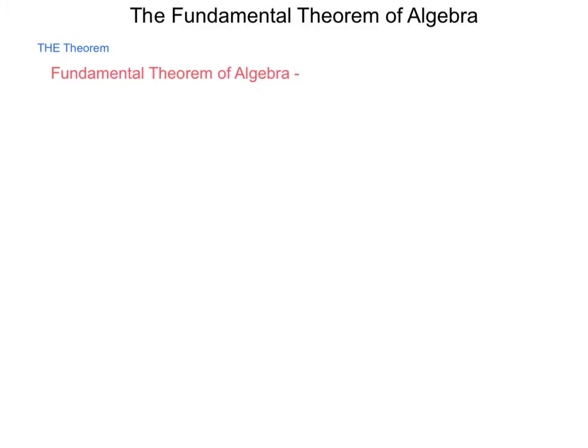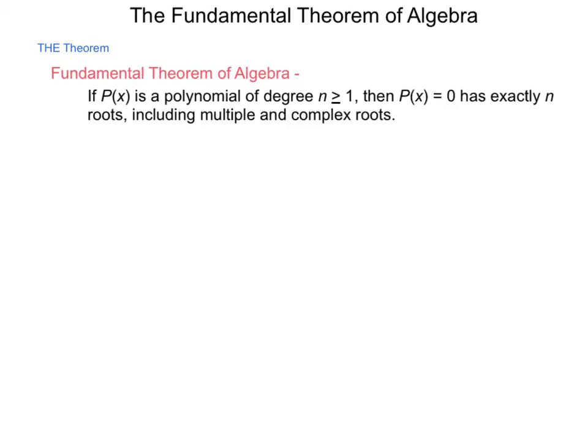It states that if P(x) is a polynomial of degree n greater than or equal to 1, then P(x) = 0 has exactly n roots, including multiple and complex roots. And the key piece here is exactly. What this means, if we were to take a quick graph of a linear function, this is n equals 1 for the degree, it has one root, and we can see it crosses the x-axis at exactly one location.